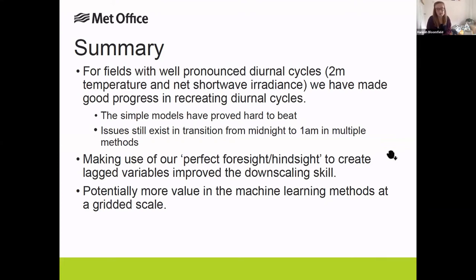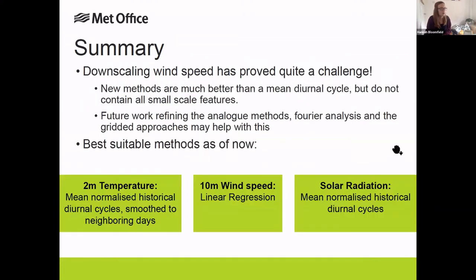As a summary, we're really pleased with how we managed to do this task. It's quite a bespoke problem, but we could definitely recreate diurnal cycles to meet temperature and shortwave radiance targets, making use of our perfect foresight and hindsight. There's potentially more value in the machine learning methods at the grid scale. Downscaling wind speed is very hard, and that's definitely where our future work would be going. It was really nice to see that simple methods actually do very well for downscaling climate data from daily to hourly resolution.